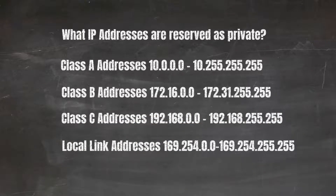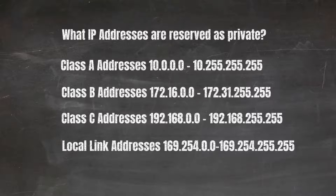There's one more address you may see called the link-local addresses, and that range is 169.254.0.0 to 169.254.255.255. If you see an IP starting with 169.254, you know it's a link-local address.